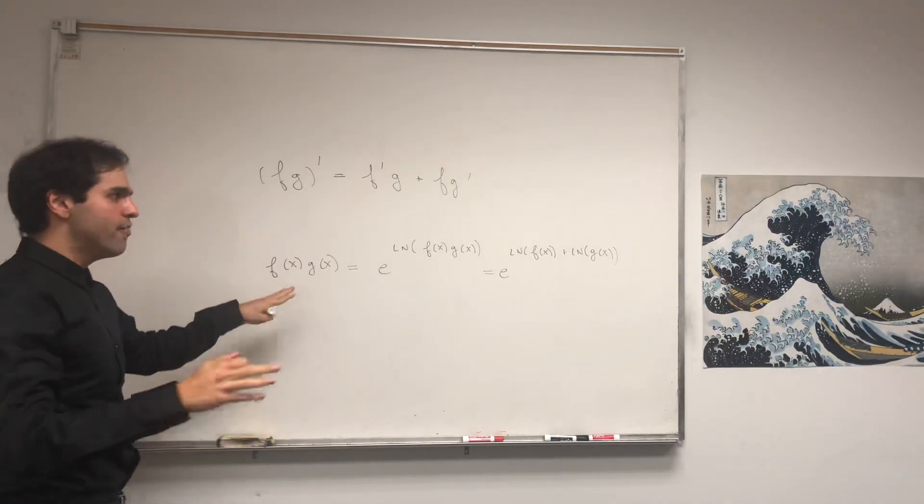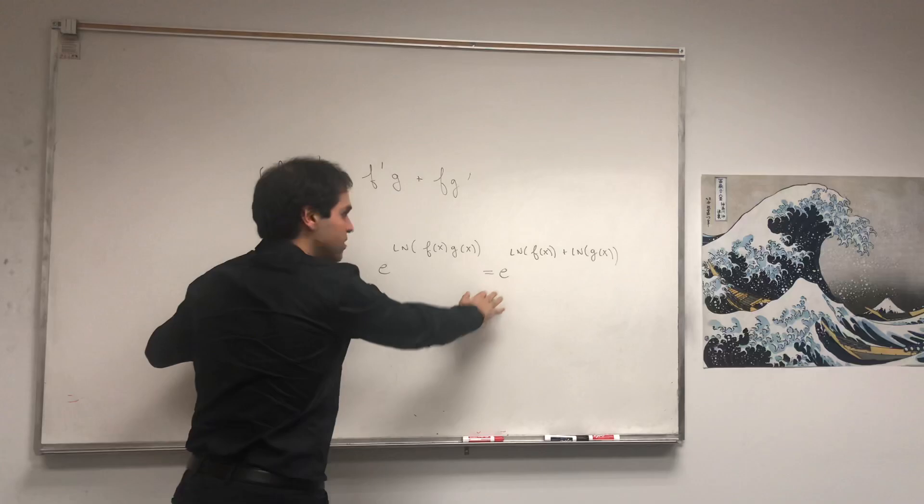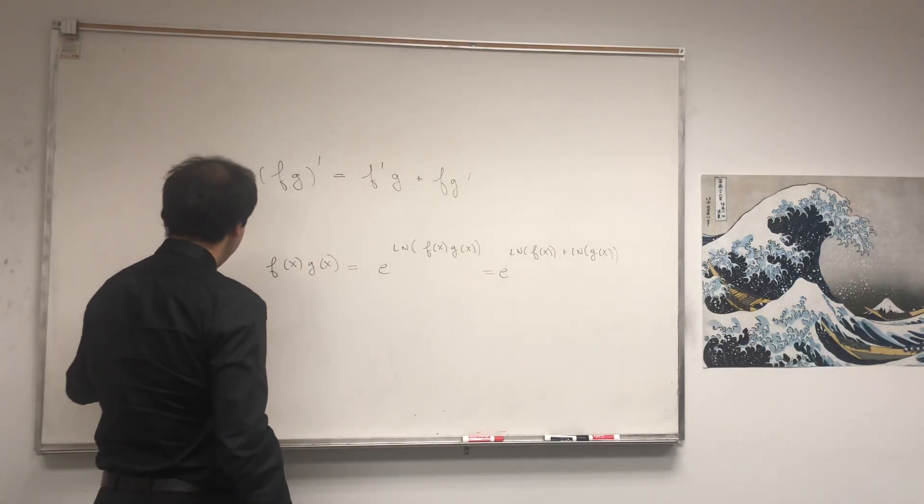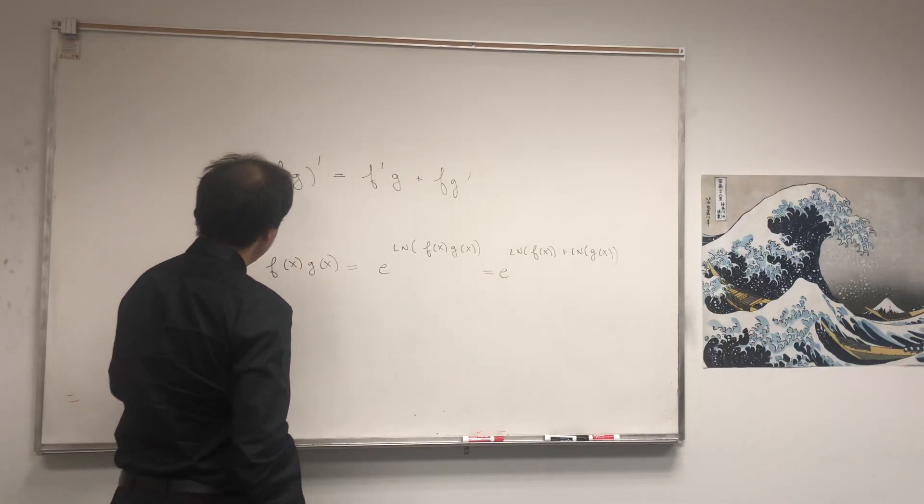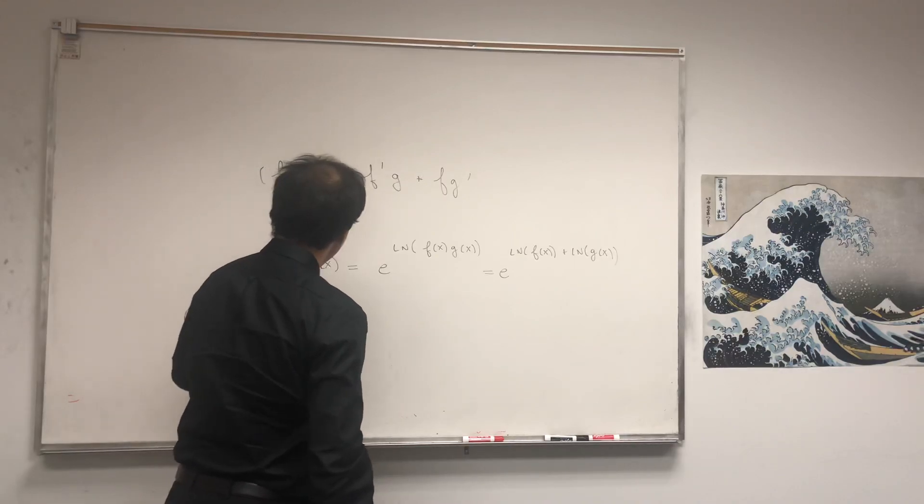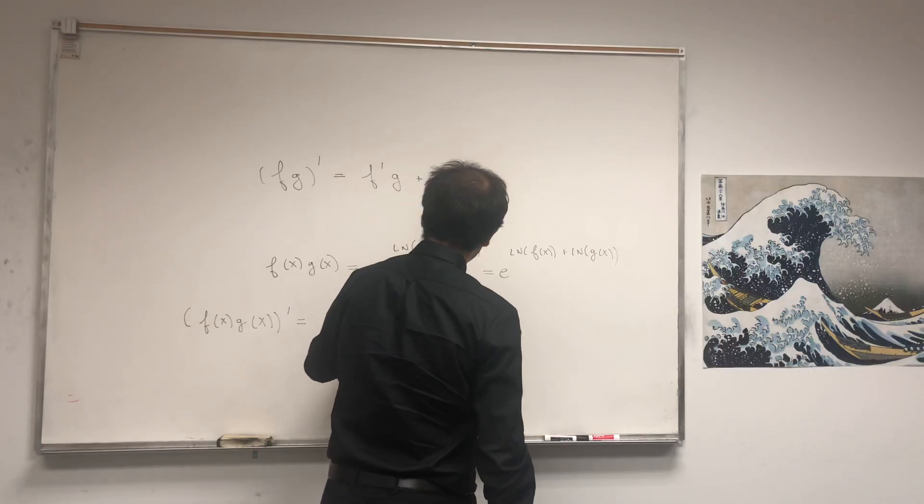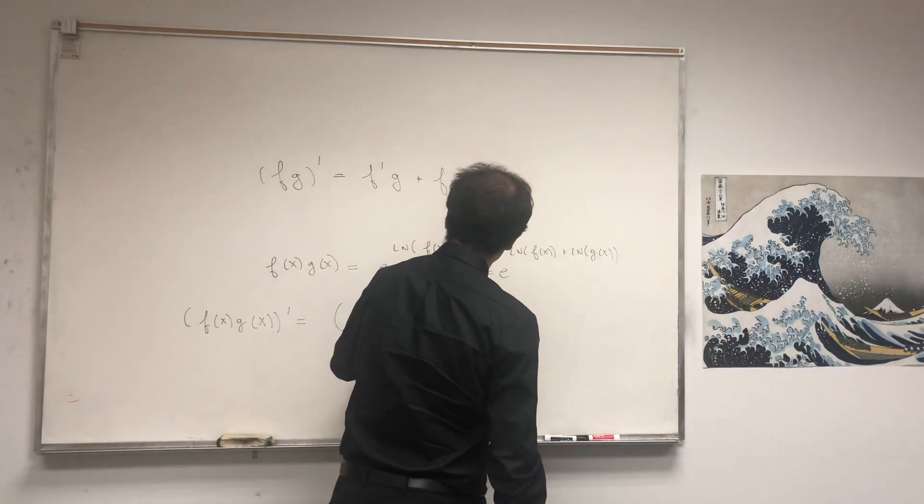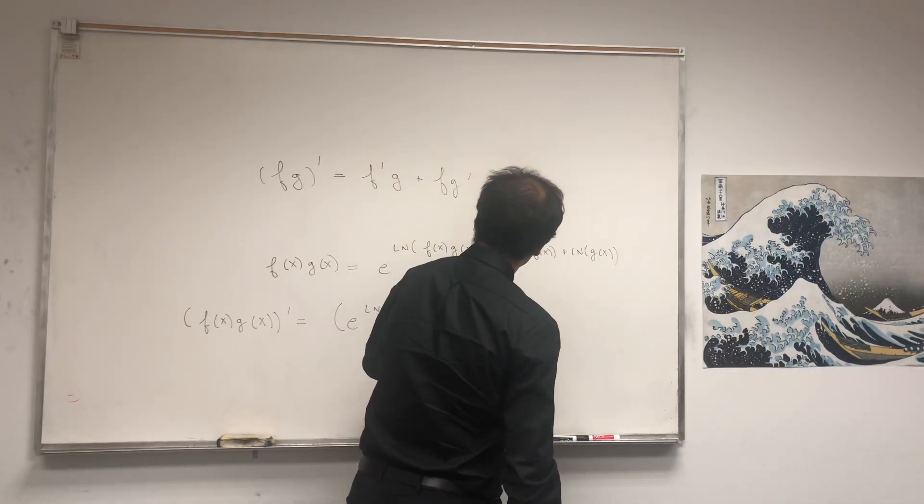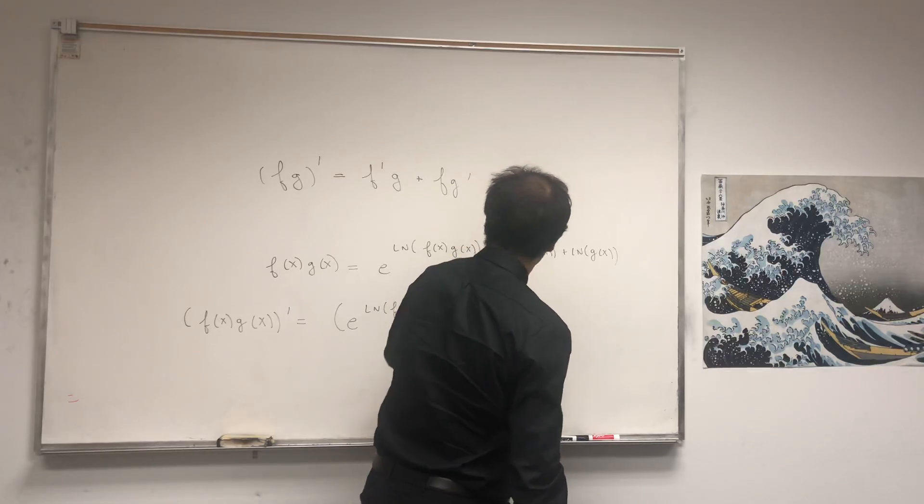Let's differentiate both sides of this equality. What do we get? f of x times g of x prime. That is e to the ln of f of x plus ln of g of x, prime.